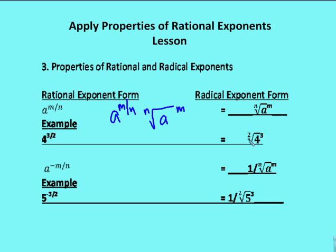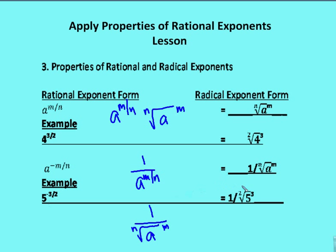This would be the square root of 4 taken to the third power. When we see a negative value as part of the exponent, it doesn't make the base negative — we're just placing that value underneath a 1, so it would be 1 over A to the M over N. The properties between rational and radical exponent form still hold. For example, 5 to the negative 3 over 2 is the same as 1 over the square root of 5 taken to the third power.